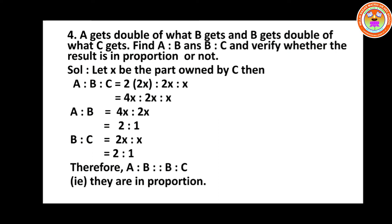Problem number four: A gets double of what B gets and B gets double of what C gets. Find A is to B and B is to C and verify whether the result is in proportion or not. Let x be the part owned by C. Since B is double C, B equals 2x. Since A is double B, A equals 4x. So A is to B is to C equals 4x is to 2x is to x.